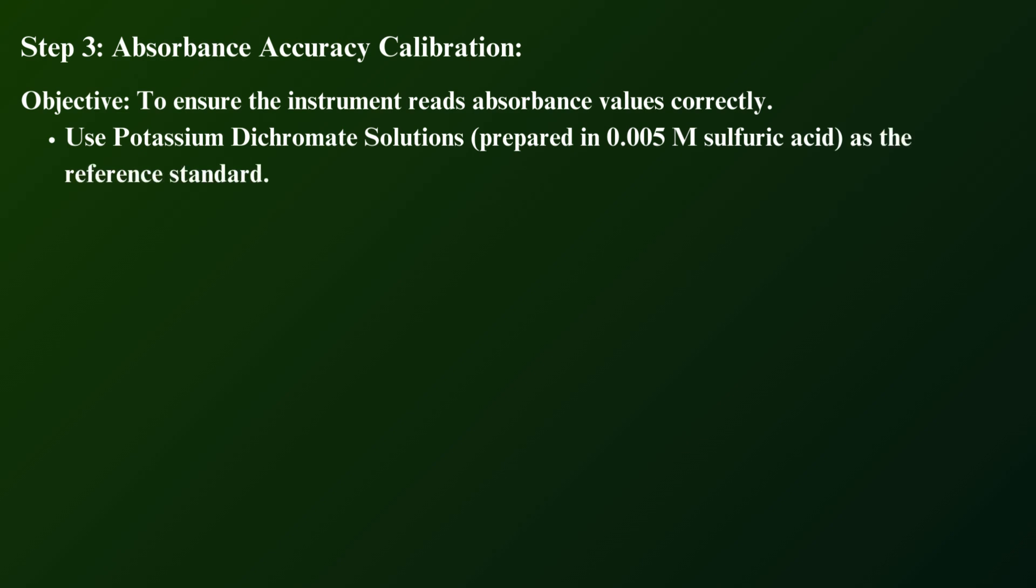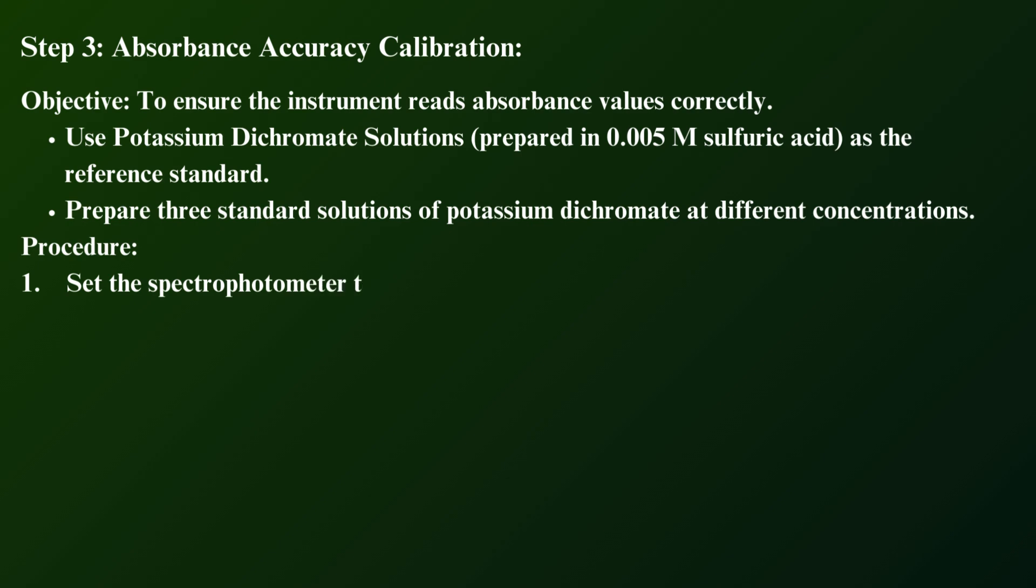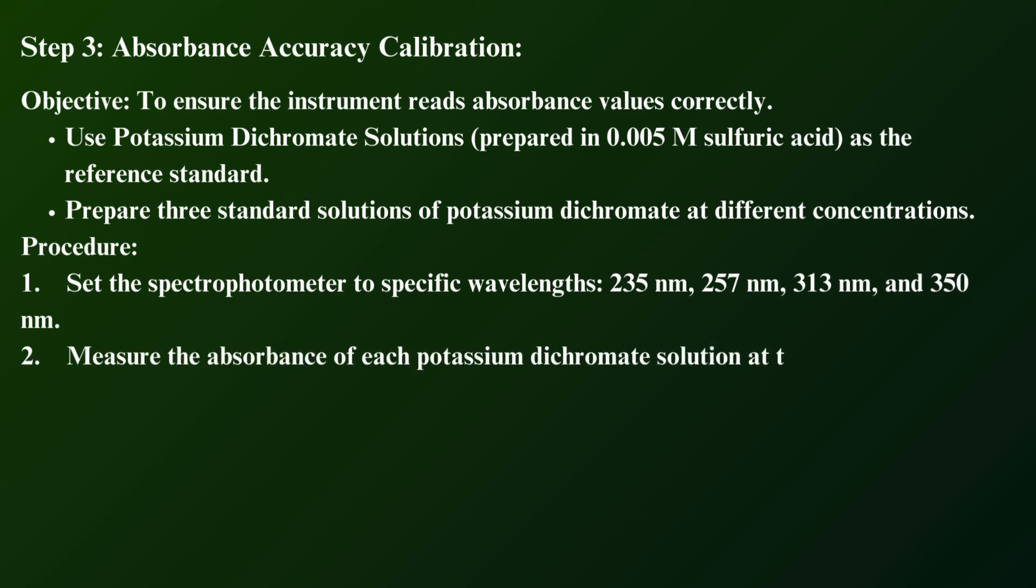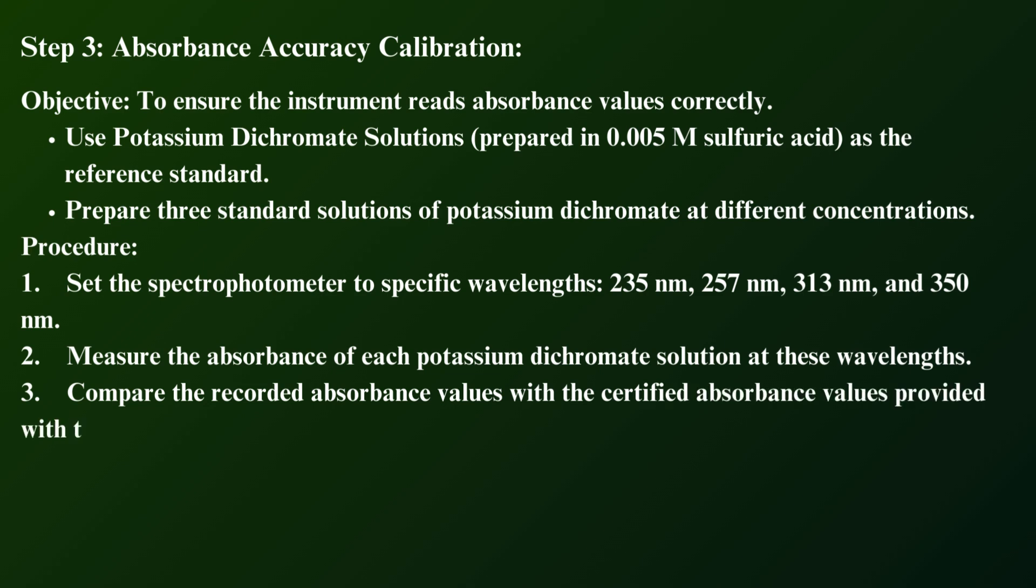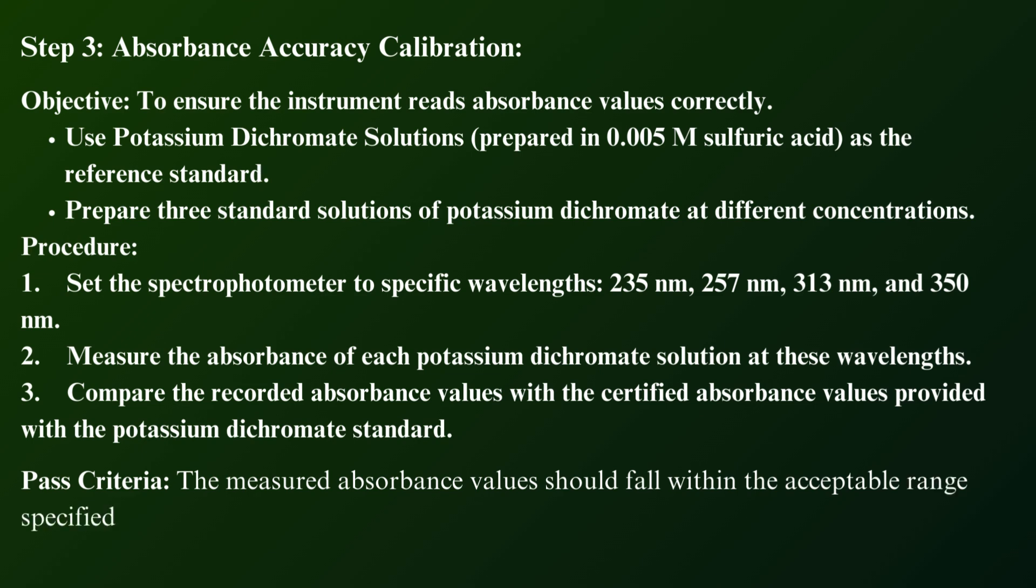Prepare three standard solutions of potassium dichromate at different concentrations. Procedure: Set the spectrophotometer to specific wavelengths: 235 nanometers, 257 nanometers, 313 nanometers, and 350 nanometers. Measure the absorbance of each potassium dichromate solution at these wavelengths. Compare the recorded absorbance values with the certified absorbance values provided with the potassium dichromate standard. Pass criteria: The measured absorbance values should fall within the acceptable range specified in the reference material certificate.